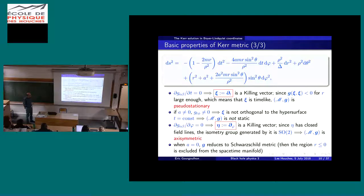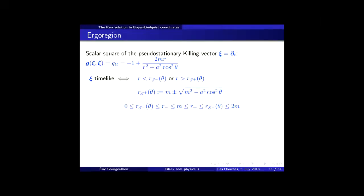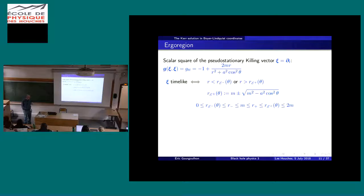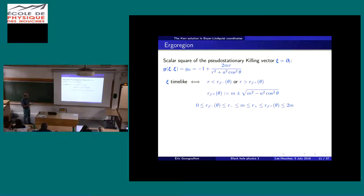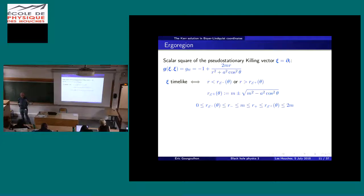We stopped there yesterday, so let's continue by discussing a new feature not seen for the Schwarzschild metric. This new feature is the concept of the ergoregion. The killing vector, the generator of time translation symmetry, is time-like far from the system. We may wonder where it ceases to be time-like — where it becomes space-like.